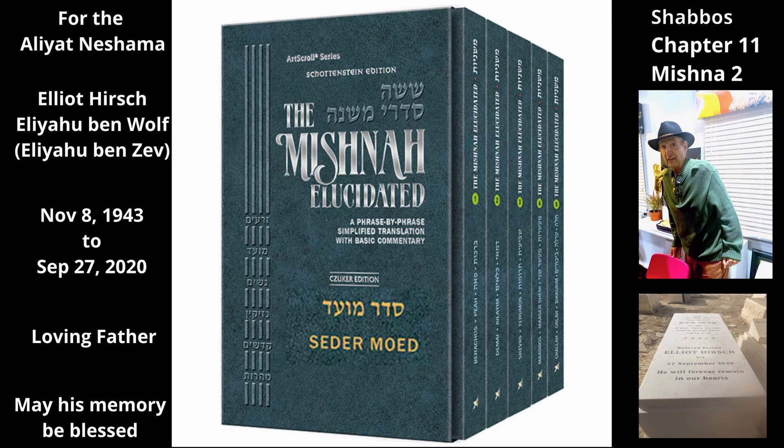One who takes an item from one of them and places it in the public domain, or one who takes an item from the public domain and places it on one of them, is liable for transferring an item between private and public domains. If, however, the dimensions of the earth around the pit, plus the depth of the pit itself, or the dimensions of the rock are less than this — less than ten tefachim high or four tefachim wide — then one who takes an item from them and places it in the public domain or vice versa is exempt, because he did not transfer an item between a private and public domain.